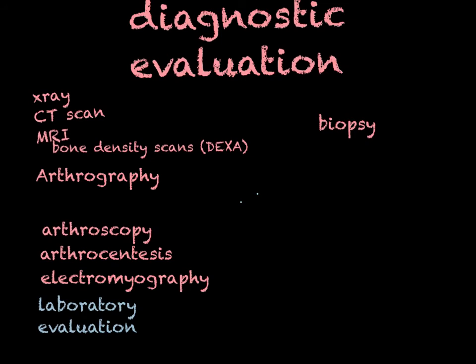A biopsy is done when we suspect some sort of cell or tissue abnormality. You can biopsy bone, muscle, or synovial fluid and synovial tissue to diagnose certain diseases. Reassure your patient that they'll get pain medicine because it can be a painful procedure. It involves taking a small amount of tissue and analyzing it under a microscope for abnormal changes at the tissue level. After the biopsy, post-op care includes ice, monitoring the site for bleeding, signs and symptoms of infection, hematoma formation, and medicating the person for pain.